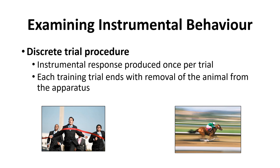Let's start with discrete trial procedures. This involves an instrumental response produced once per trial. You put the cat in the puzzle box and measure one thing: how long it takes to get out. When they're done, you record one measure because they've escaped the box once — the operant response occurred once and the trial is over. These are discrete, self-contained trials. Each trial ends with removal of the animal from the apparatus; if a rat is running a maze, when they find the goal, you take them out.